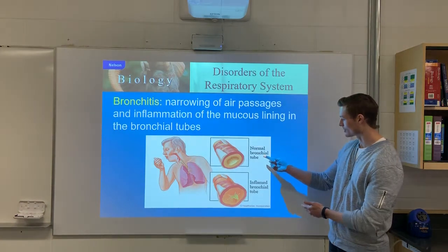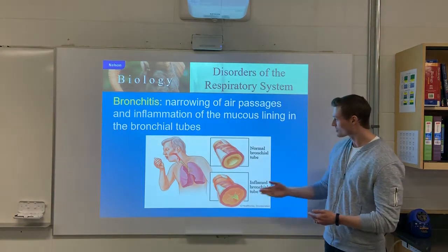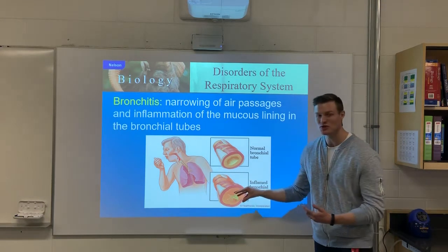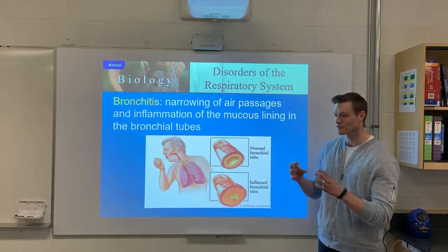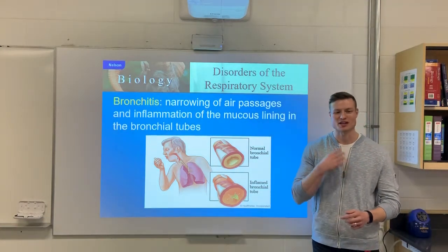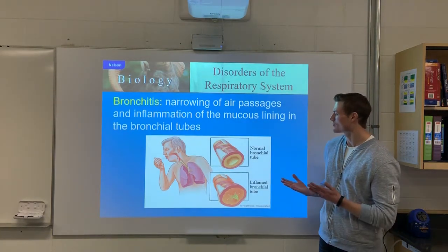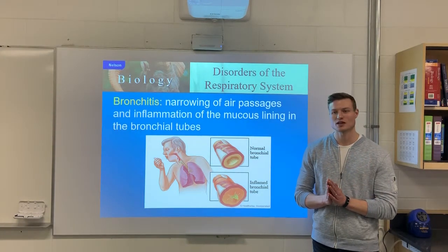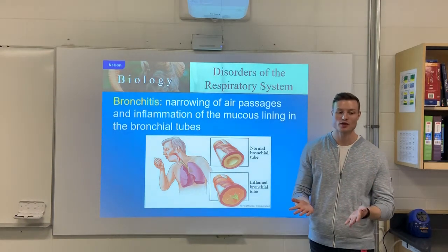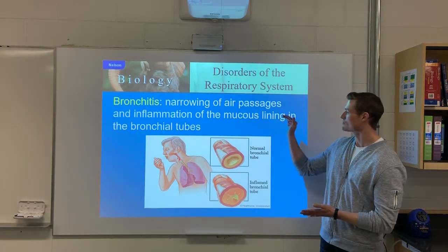A normal bronchiole has a nice open airway where air, oxygen, and CO2 can flow in and out. But when you have an inflamed bronchiole, the lining gets inflamed and swells up, and you get a buildup of mucus within the bronchioles. This leads to coughing and a phlegm-like mucus cough. It can be caused by getting sick, or by activities such as smoking or possibly vaping. So bronchitis is simply an inflammation of the mucus lining within your bronchial tubules.